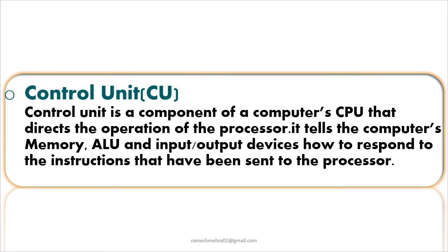The second component is the Control Unit. The Control Unit is a component of a CPU that directs the operation of the processor. It tells the computer's memory, input-output devices, and other components how to respond to the instructions received.